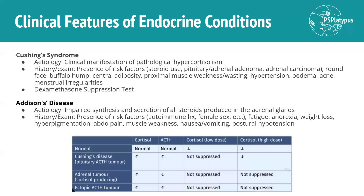Two other important conditions are Cushing's and Addison's. Cushing's is the clinical manifestation of pathological hypercortisolism. The big risk factor is steroid use, as well as adenomas and carcinomas of the adrenal and pituitary glands. Symptoms include round or moon face, buffalo hump, central adiposity, proximal muscle wasting and weakness, hypertension, edema, acne, and menstrual irregularities. It's classically diagnosed through the dexamethasone suppression test, which is worth looking at.